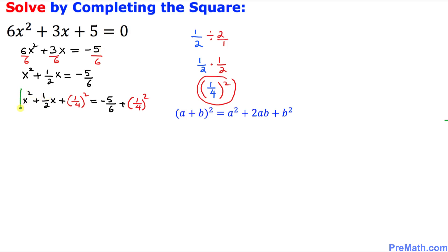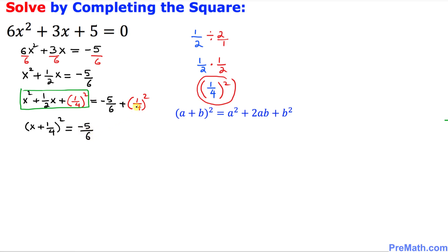Let's focus on the left hand side only — this represents a perfect square. We use the formula (a + b)² = a² + 2ab + b². So we can write the left hand side as (x + 1/4)². On the right hand side, we have negative 5/6, and (1/4) squared equals positive 1/16.